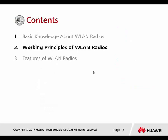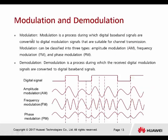Number two: the working principle of WLAN radio — modulation and demodulation. Modulation is the process during which digital baseband signals are converted to digital modulated signals suitable for channel transmission. All digital signals must first be modulated before transmitting. When the receiver receives the radio wave, it performs demodulation to convert it back to the original digital signal.